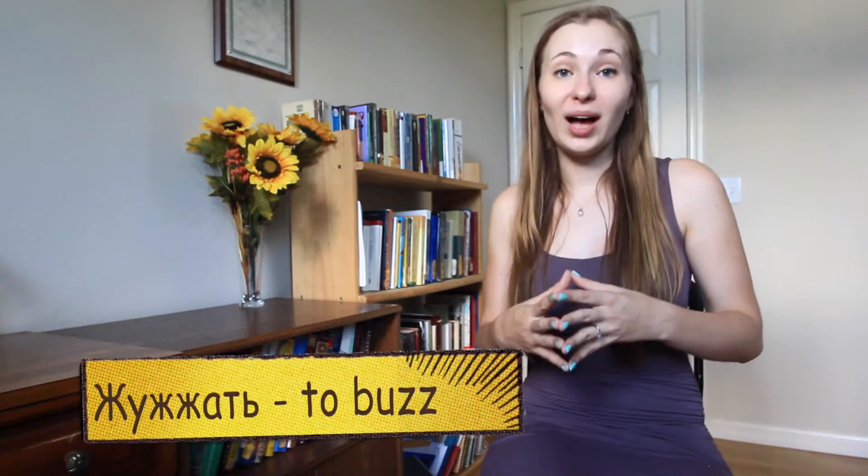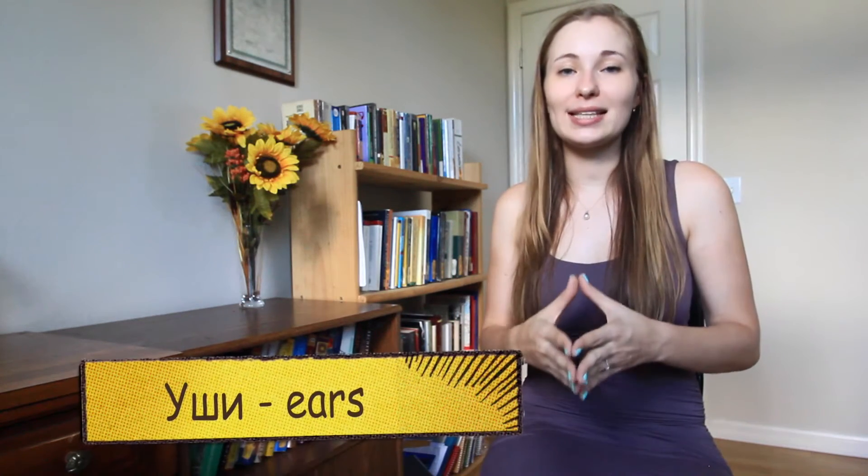Let's look at the literal translations. Жужжать means to buzz like a bee, Все means all, and уши means ears. So literally, to buzz through all ears.